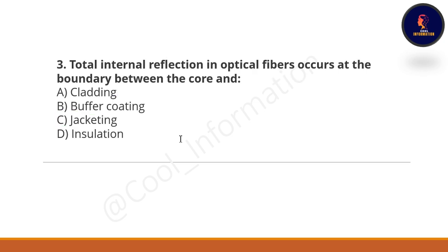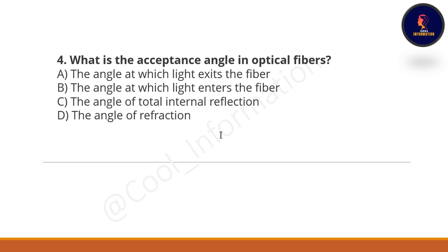Next question: Total internal reflection in optical fiber occurs at the boundary between the core and what? Option A: cladding. Option B: buffer coating. Option C: jacketing. Option D: insulation. The correct option is A — cladding.